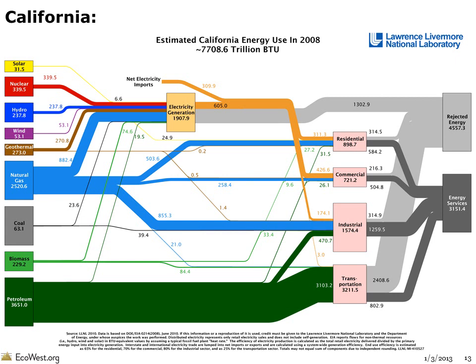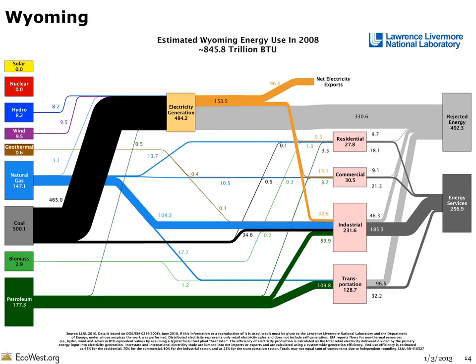Looking at the electricity generation box, you can see that natural gas now provides the biggest share of the state's power portfolio, but nuclear, hydro, and geothermal are also major contributors. There's barely any coal used for power generation within California, but the state also imports a fair amount of energy from other states, including coal-fired power plants in the southwest. It's a totally different story in Wyoming, where virtually all of the electricity generated in the state comes from coal, and some of that power is also exported to other states.